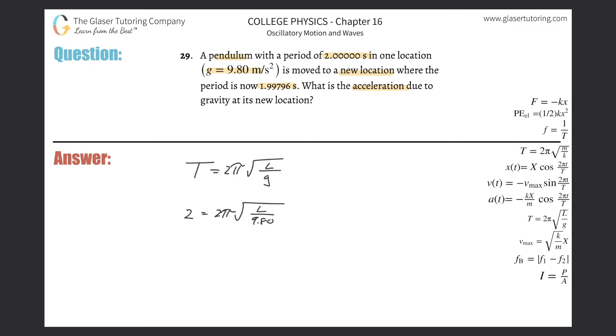So divide out the 2π from both sides. So it's going to be 1 over π essentially, then we'll be equal to square root of l over 9.8. You've got to square both sides to get rid of that square root.